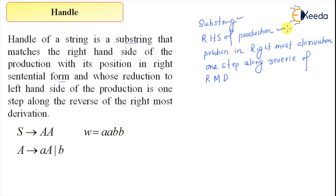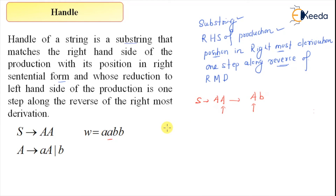So let's say this is the grammar and this is the string, and let me derive the rightmost derivation for this. So S derives double A. The rightmost symbol I can derive to is A → ab. This is the leftmost as well as rightmost symbol, and I go to small a, capital A, b. Replacing again gives double A, capital A, b. Finally replacing gives double A, b, b.